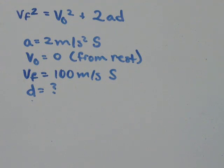So we're going to go through an example together. We have an object accelerates uniformly from rest to a final velocity of 100 meters per second south with constant acceleration of 2 meters per second squared south. Find the displacement.